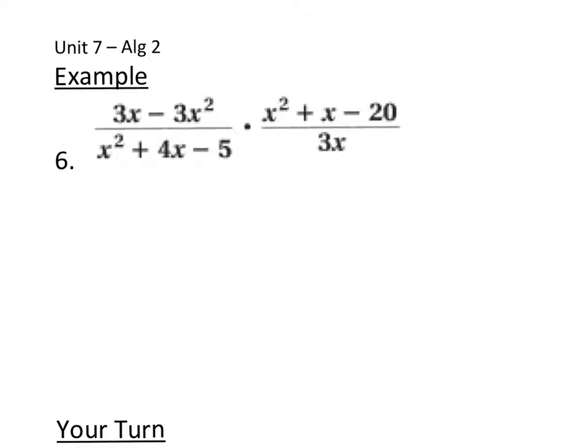Okay, so if we want to simplify this expression, the first thing we want to do is simplify each of the expressions, and one way to do that is factor out. If I'm looking at the top on the first part, the greatest common factor is 3x, so let's factor that out. So I get 3x and I'm left with 1 minus x. You factor it out and it leaves you with an x.